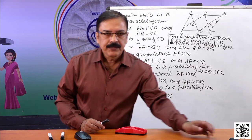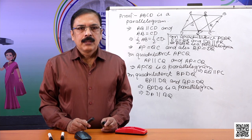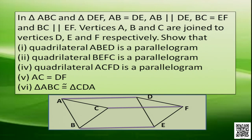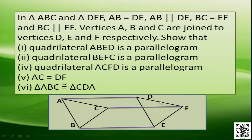Now let us have another question. In triangles ABC and DEF, AB is equal to DE and AB is parallel to DE. Again, BC is equal to EF and BC is parallel to EF. Vertices A, D, C, F, and BE are joined. We have to prove that ABED is a parallelogram, BEFC is a parallelogram, and ACFD is a parallelogram.